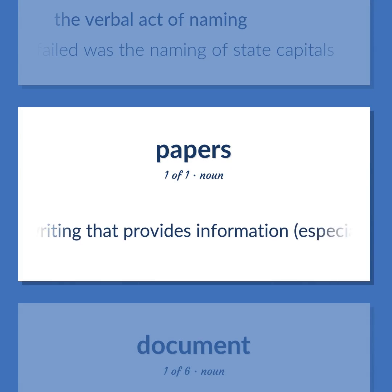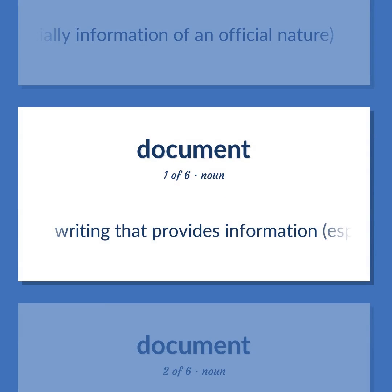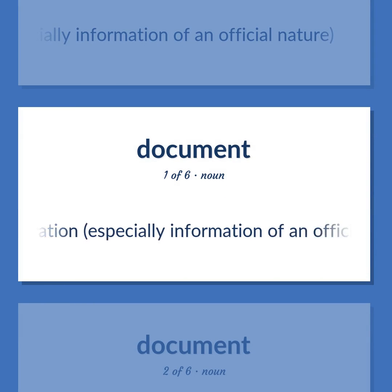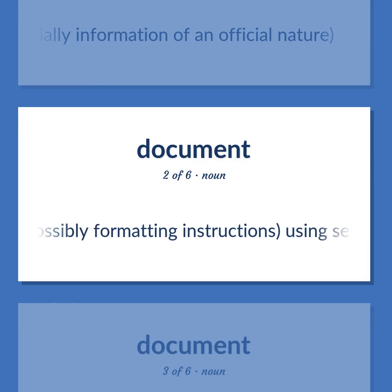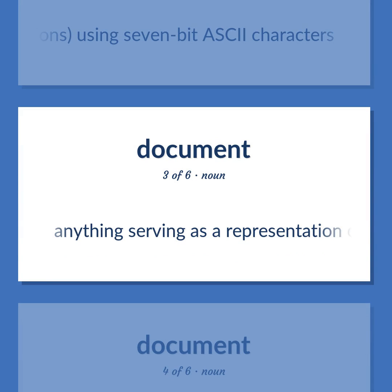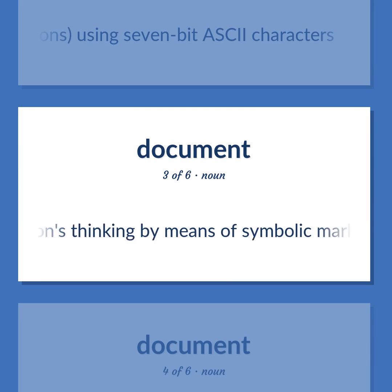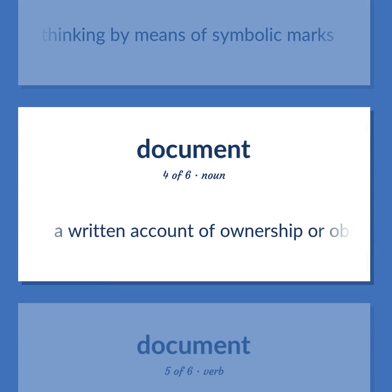Writing that provides information, especially information of an official nature. Computer science: a computer file that contains text, and possibly formatting instructions, using 7-bit ASCII characters. Anything serving as a representation of a person's thinking by means of symbolic marks. A written account of ownership or obligation.